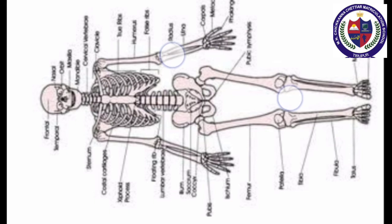There are different types of bones in the human skeletal system: long bones, short bones, flat bones, and irregular bones.